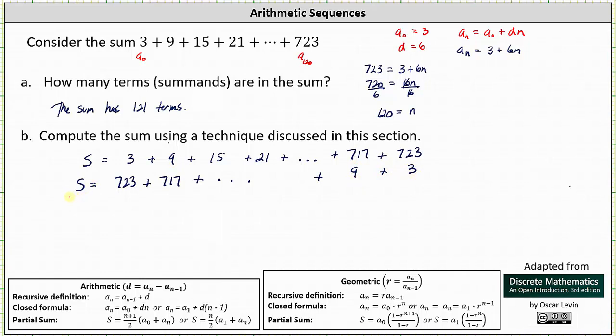And now we're going to go ahead and add these two equations together. On the left, we have S + S, which is 2S, equals on the right, 3 + 723 = 726. Plus, notice 9 + 717 is also 726.